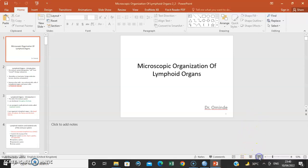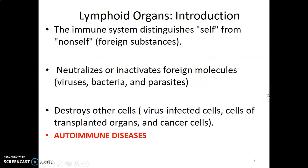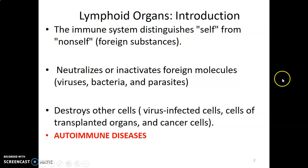This comprises the lymphoid organs. The immune system is able to distinguish self from non-self, so any foreign substances are identified. Lymphoid organs help to neutralize or inactivate foreign molecules such as bacteria, viruses, and parasites. They are also able to destroy cells that are infected by viruses, cancer cells, or cells that are from transplanted organs.